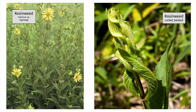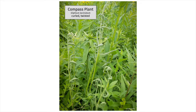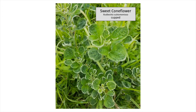This is rosinweed, Silphium integrifolium. On the left is an example of a normal plant not showing symptoms of herbicide exposure. On the right is a very different looking plant — notice the twisting and curling. This is compass plant, another one of the silphiums — notice the curling and twisting in the leaves. And finally, this is sweet coneflower. You will notice that these plants have curled and cupped leaves, similar to what we might see in soybean or green bean.